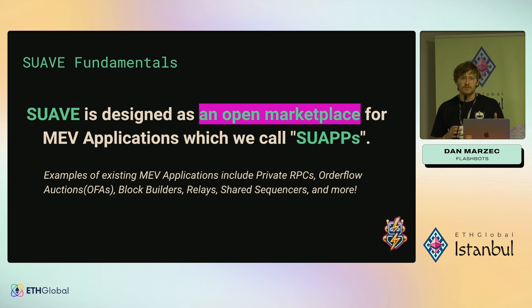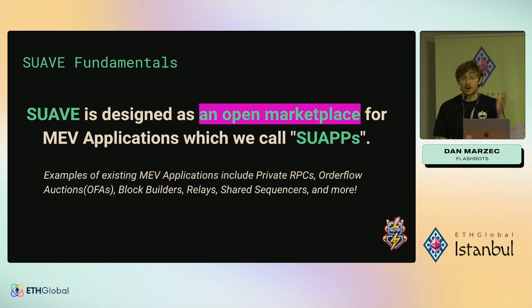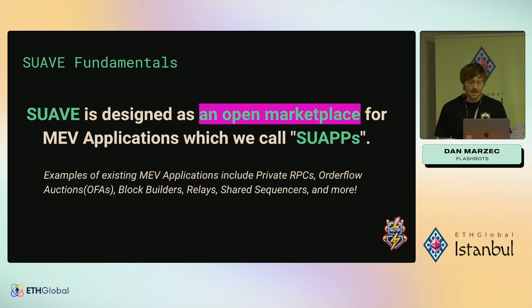We also have this model of programmable privacy where, say you send a swap to one of these platforms, you can purposefully leak subsets of the information to searchers. The less you leak, the harder it is to search on it. The big question is: where is the privacy-efficiency frontier? There are many, many MEV application designs and every person is basically rewriting from the ground up their own private servers. So Suave is designed as an open marketplace for MEV applications — examples include private RPCs, order flow auctions, block builders, relays, shared sequencers, and basically whatever you could imagine.